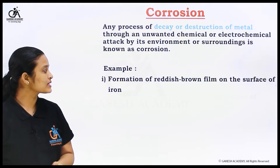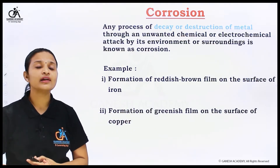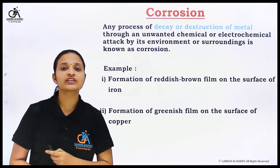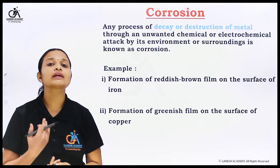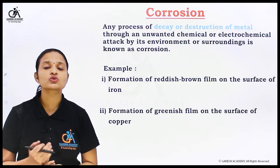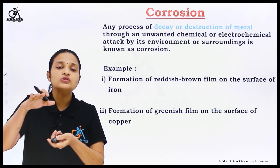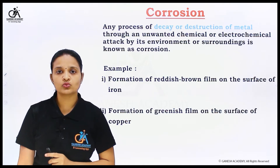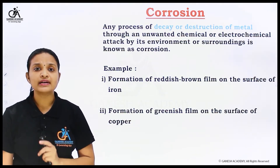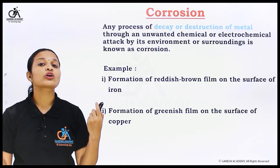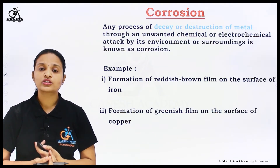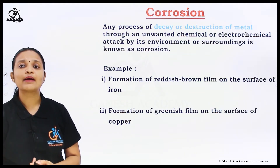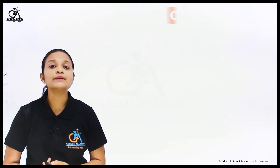The second example is regarding copper metal. In that case, there is formation of a greenish film on the surface of copper. When copper metal comes in contact with surrounding conditions or chemicals, a greenish film forms on the surface of that copper. These are examples of metals where, when the metal comes in contact with the surrounding media, corrosion takes place on that particular metal. In the next slide I will explain the types of corrosion.